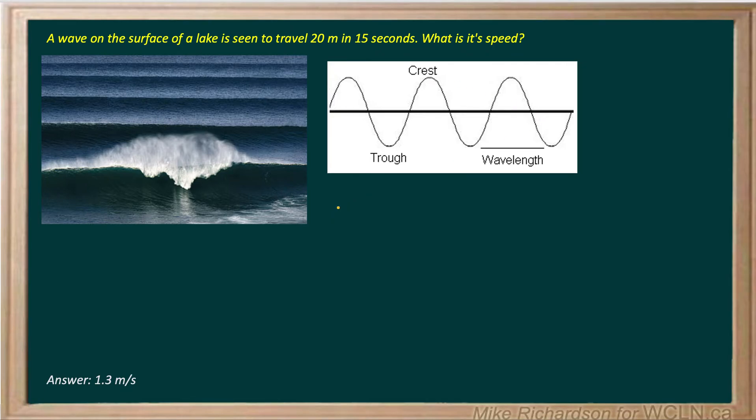We have two equations to find speed of a wave. One is more of a generic equation, just the one we've seen in kinematics, distance over time. Or if we have specifics about the wave, we can use v equals the frequency of the wave times its wavelength.